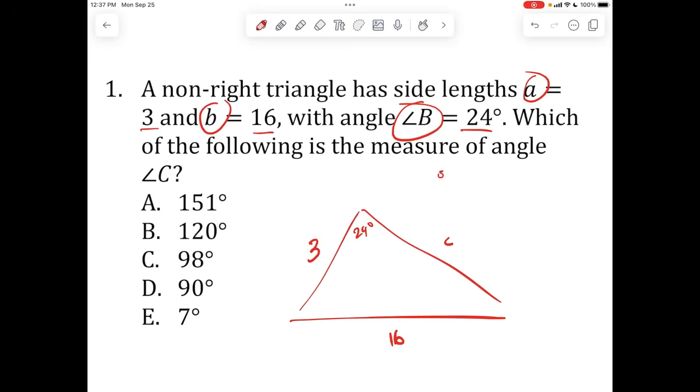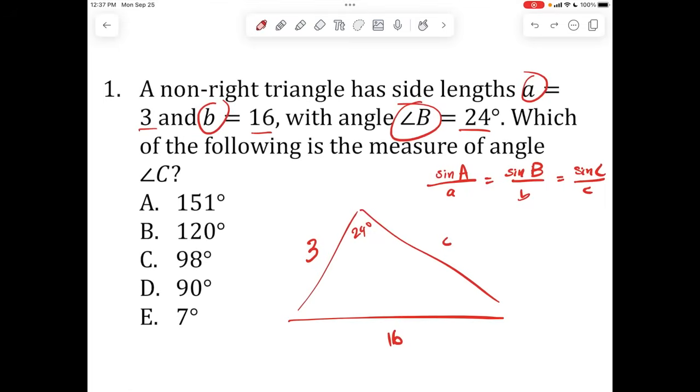We know angle B is opposite of side length B. So let's call this 24 degrees. Again, absolutely not to scale. So how are we going to actually solve this? You can either use law of sines or law of cosines. Let's try plugging this into law of sines. Law of sines basically says sine A over a equals sine B over B equals sine C over C. These are lowercase on the bottom, uppercase on top. Uppercase is for angle measures, lowercase is for side lengths.